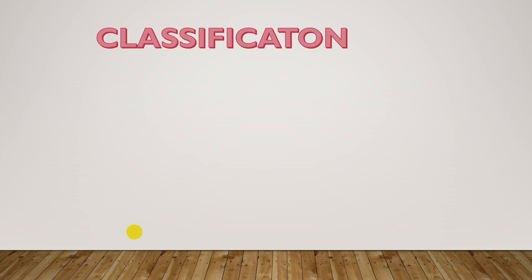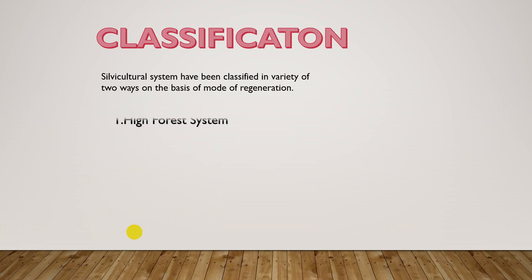Silvicultural systems have been classified in two ways on the basis of mode of regeneration. The two main categories are the high forest system and the coppice system.